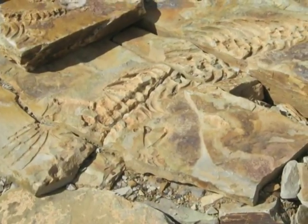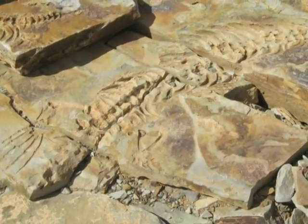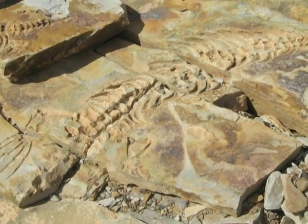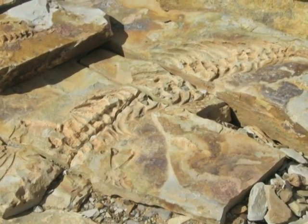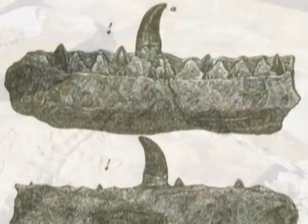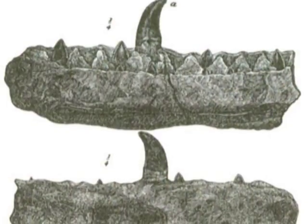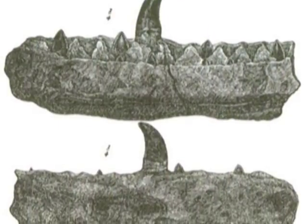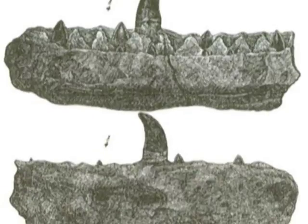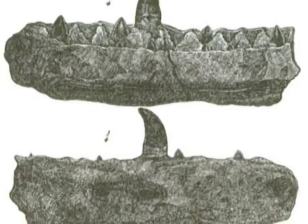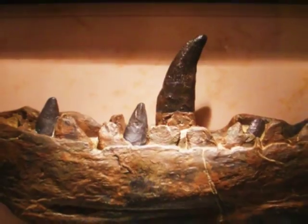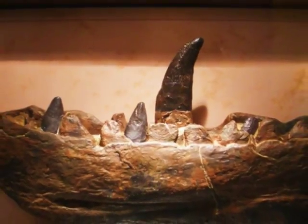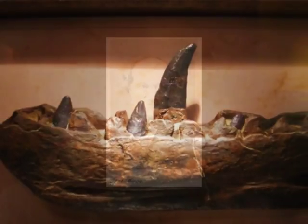Some say that the most famous fossil of them all is the Megalosaurus. This was once originally thought to be a giant human who once roamed the earth. After considerable speculation, scientists thought this to be an unlikely candidate for the mystery animal. It was unearthed in England in 1676.